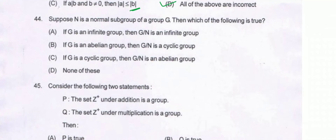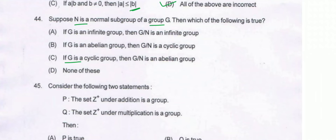Question number 44: suppose N is a normal subgroup of a group G, then which of the following is true? If G is cyclic, then G upon N is abelian, because G is cyclic and every cyclic group is abelian. Therefore G is abelian and G upon N is also abelian, which means option C is correct.